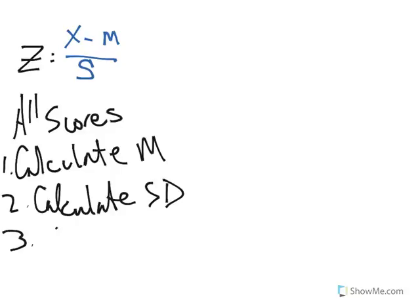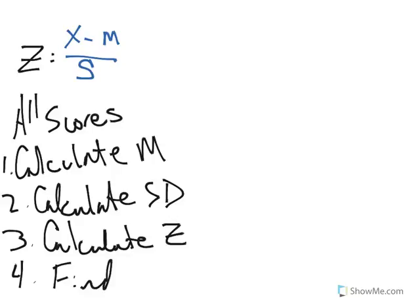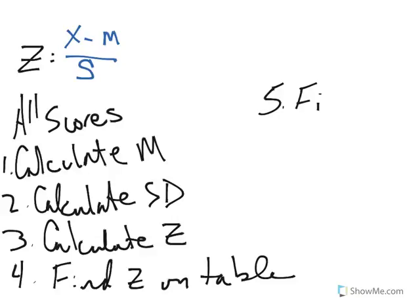1. Calculate the mean. 2. Calculate the standard deviation. 3. Calculate the z, the standard score. 4. Find the z on table. 5. Figure the percentage or the percentile. I'm concentrating on the percentile. You can figure out all kinds of other things from standard scores, but the percentile really is the thing that makes the most sense.